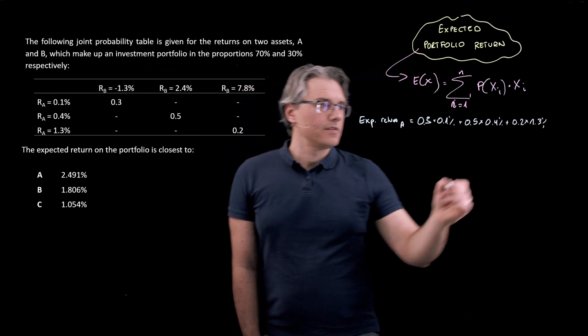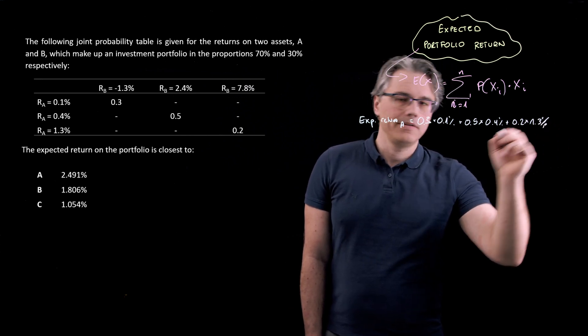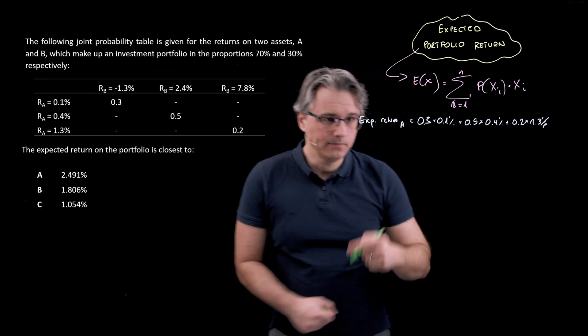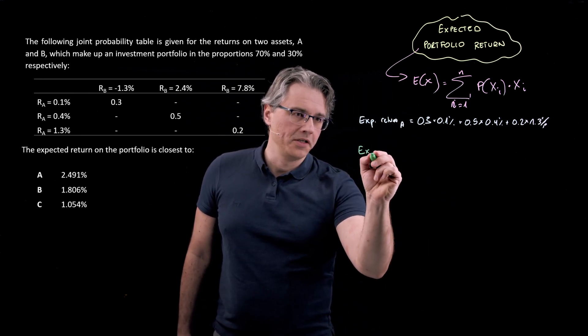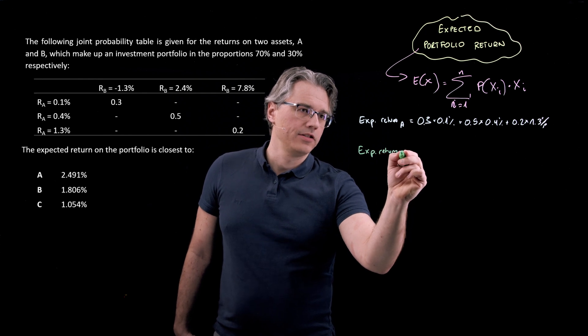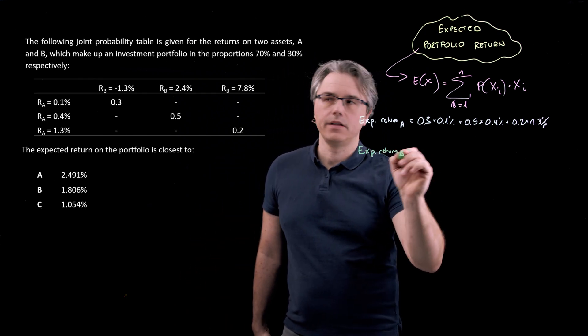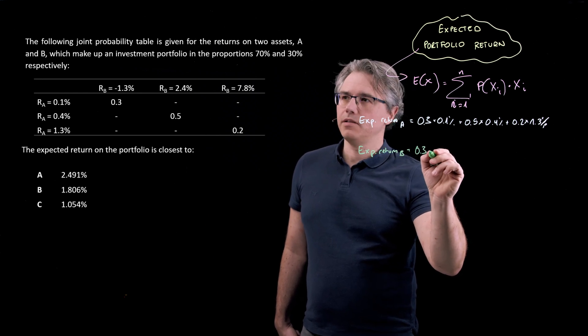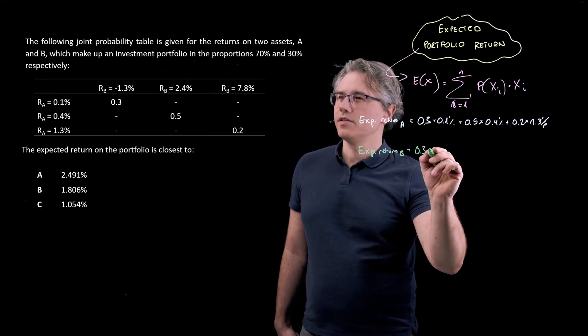And same, so that should be a percentage sign. Now, same thing for the other one. Let's write it out before I hit the calculator. Expected return on B is 0.3 or 30% probability that B will have a result. Now, you've got to be very careful there because there's a little minus sitting there at the top.